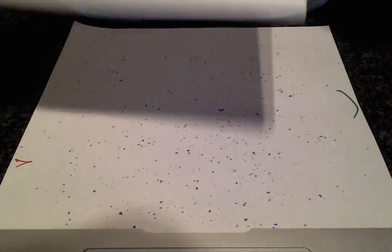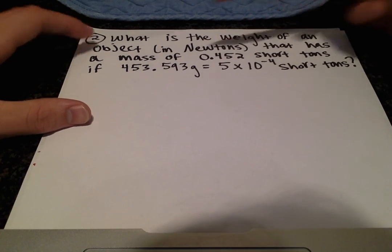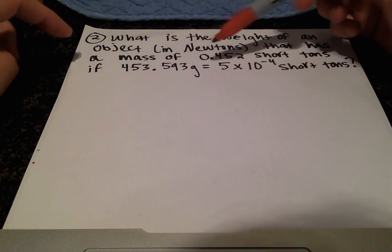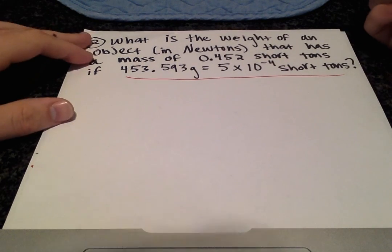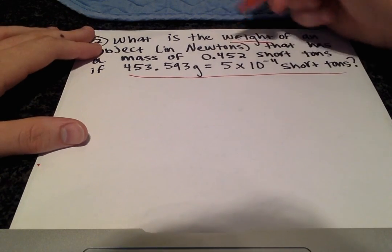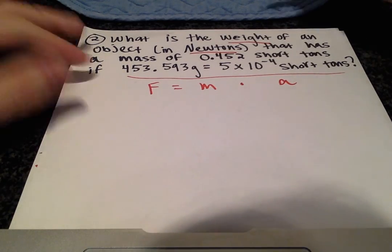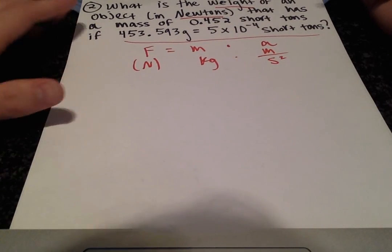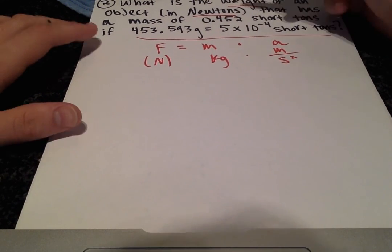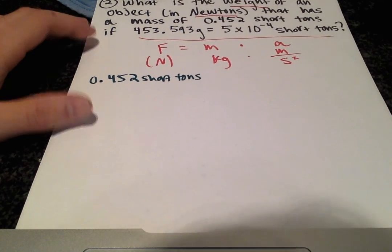Moving on to another problem. This one's a little more involved. Okay, so what is the weight of an object in newtons that has a mass of 0.452 short tons if 453.593 grams equals 5 times 10 to the negative 4th short tons? Okay, so they give us one of the necessary conversion units. So this is one, since we're dealing with weight and it's in newtons, that's going to be a force. So force equals mass times acceleration. In this case, we have force in newtons and that's going to be kilograms times meters per second squared. And what I always like to do is write what we're given or our starting value. So we're starting with a mass of 0.452 short tons.